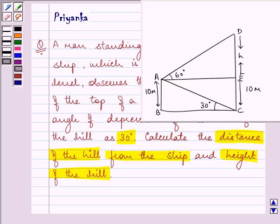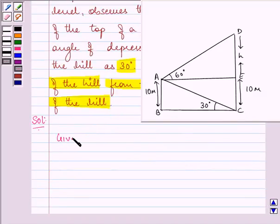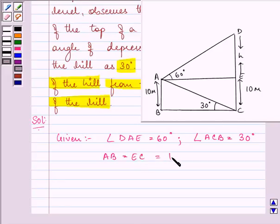This is the figure that will help us in finding the solution to this question. Here, what we are given is angle DAE is equal to 60 degrees, whereas angle ACB is equal to 30 degrees. And we are given that the height of the deck from the water level is 10 meters. So AB is equal to EC, as it is forming a rectangle, is equal to 10 meters.